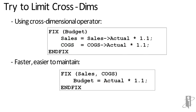So if I can pivot this calculation, I can instead say: let's just fix on sales and cost of goods sold, and let budget equals actual times 1.1. Not only is that second version a little easier to read, it's easier to maintain if I want to add a new account, and it actually runs faster than the one above.